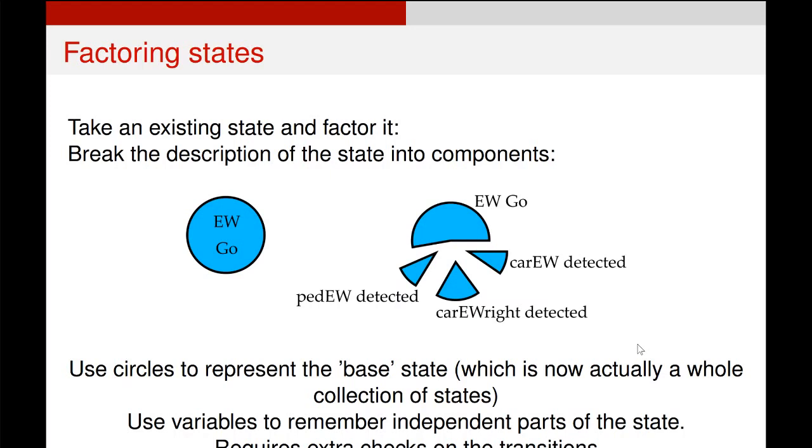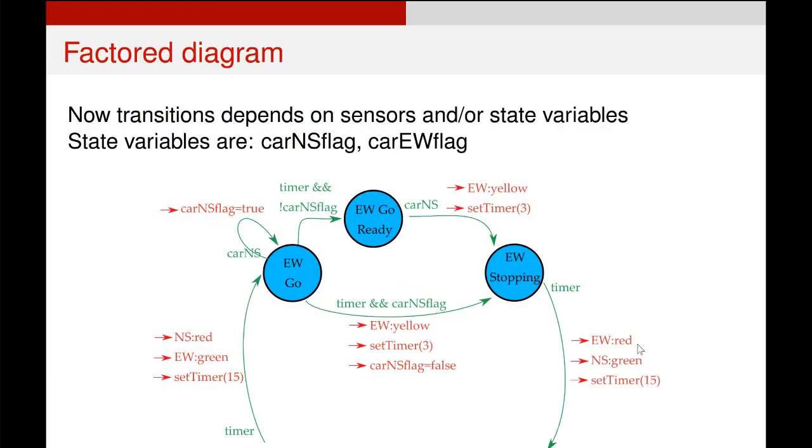For example, we could take our east-west go state and we could have a chunk of it that corresponds to whether a pedestrian was detected or whether there's a car waiting to turn right. We use variables to remember whether those values are true or false and then we just require extra checks on the transition.